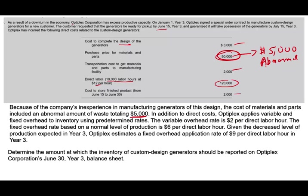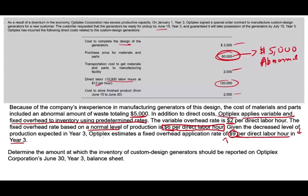In addition to direct costs, Optiplex applies variable and fixed overhead to inventory using a predetermined overhead rate. The variable overhead rate is $2 per direct labor hour. The fixed overhead based on a normal level of activity is $6 per direct labor hour. Because of the decreased level of production expected in year three, Optiplex estimates a fixed overhead application rate of $9 per direct labor hour. However, since IFRS requires normal level allocation, we use the normal rate of $6, not the higher rate of $9.